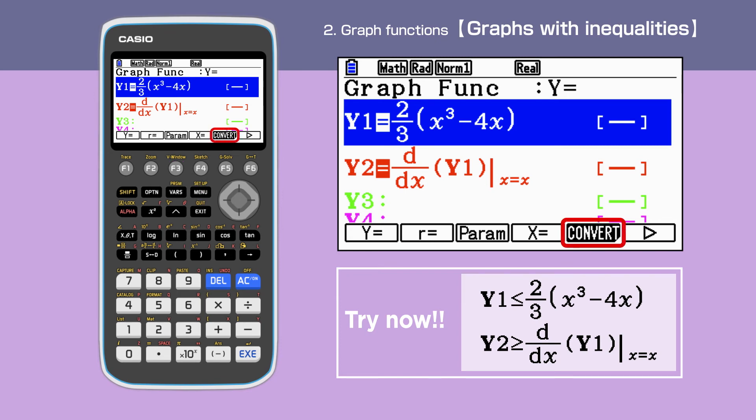Entering F5 allows us to change graph type. For this example, we choose to change y is smaller than or equals to instead of y equal. This can be done by pressing F5. We also change to the same inequality with equation y2.